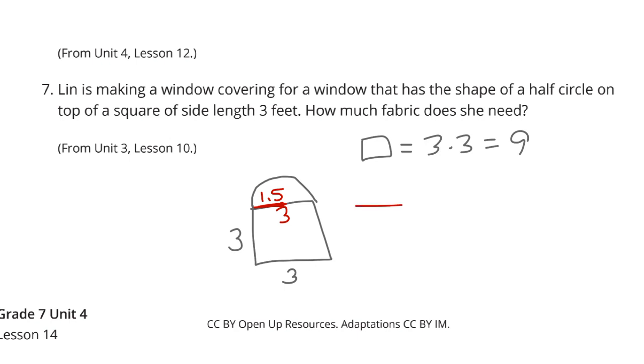For the circle, or the half circle, with a radius of 1.5, the area of a full circle is equivalent to pi times radius squared. So we're looking at 3.14, about, times 1.5 squared. 1.5 squared is equal to 2.25. Multiply that by the 3.14, and you get about 7.065.